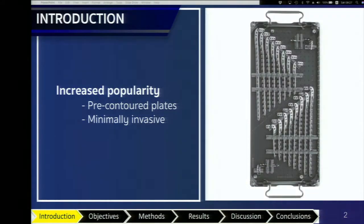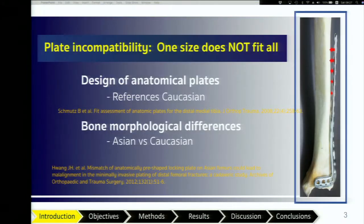The use of pre-contour plates is increasing due to advances in minimally invasive surgery. Anatomical plates have been designed based on Caucasian population models. There are significant differences in bone morphology between Asian and Caucasian populations, which have resulted in plate incompatibility.